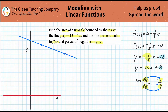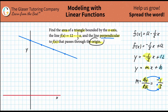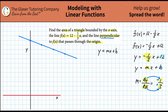Now we have to create a line that is perpendicular to this f of x we just drew, and it has to pass through the origin. They're actually telling me the y-intercept by saying it passes through the origin — so y equals mx plus b, where b equals zero. So the equation simplifies to just mx.